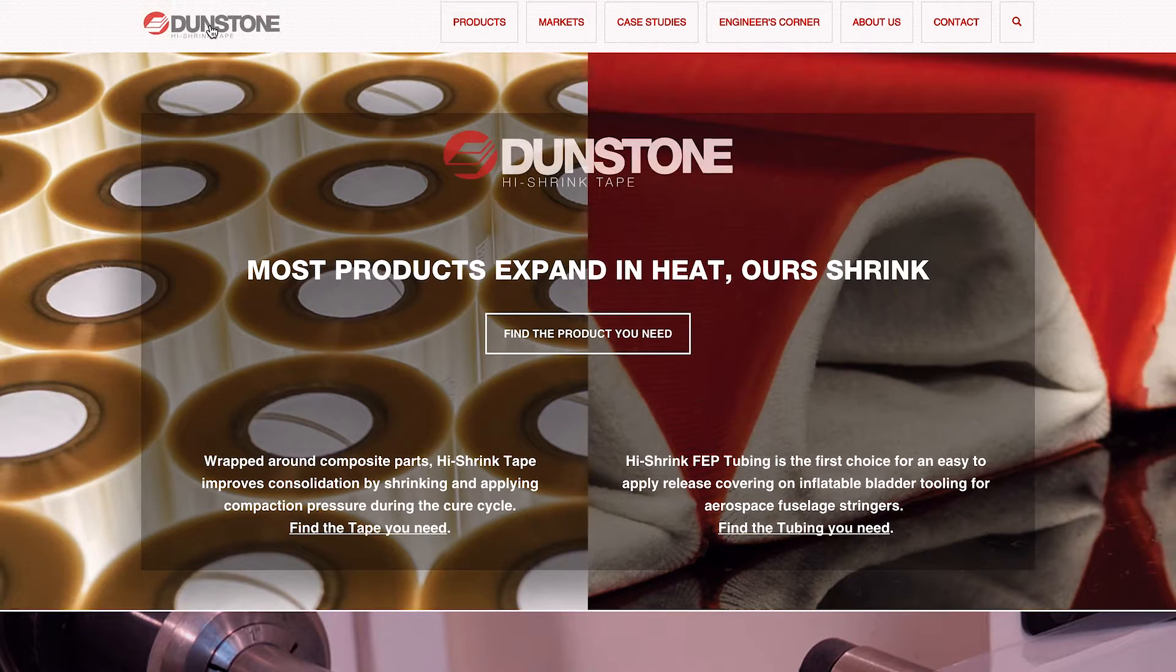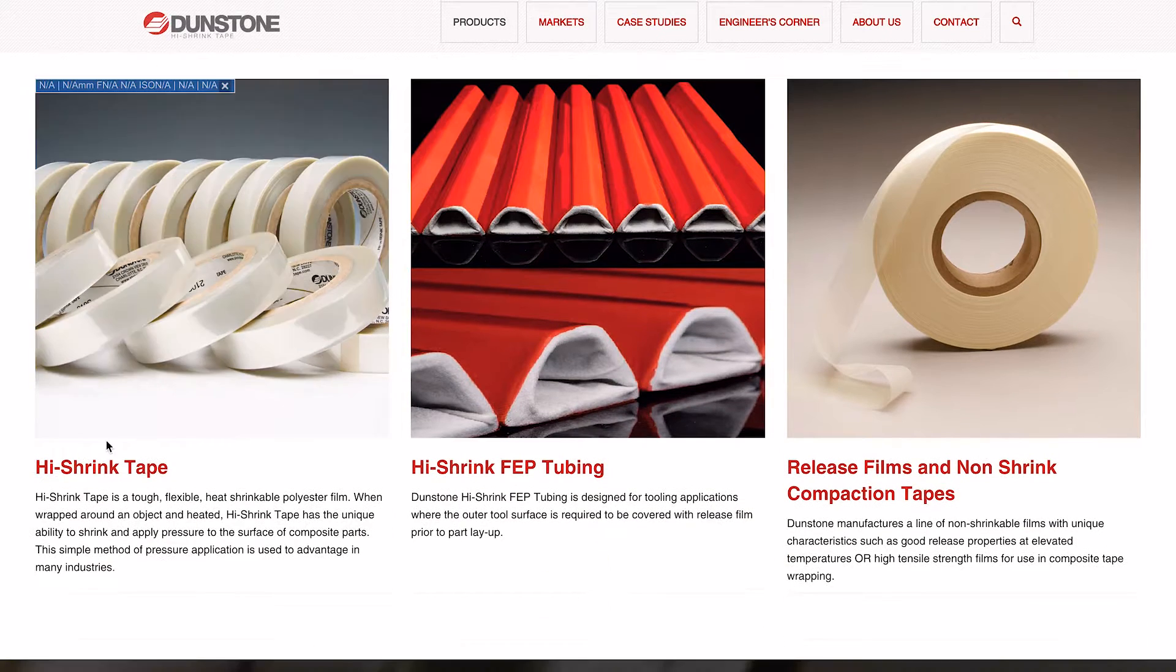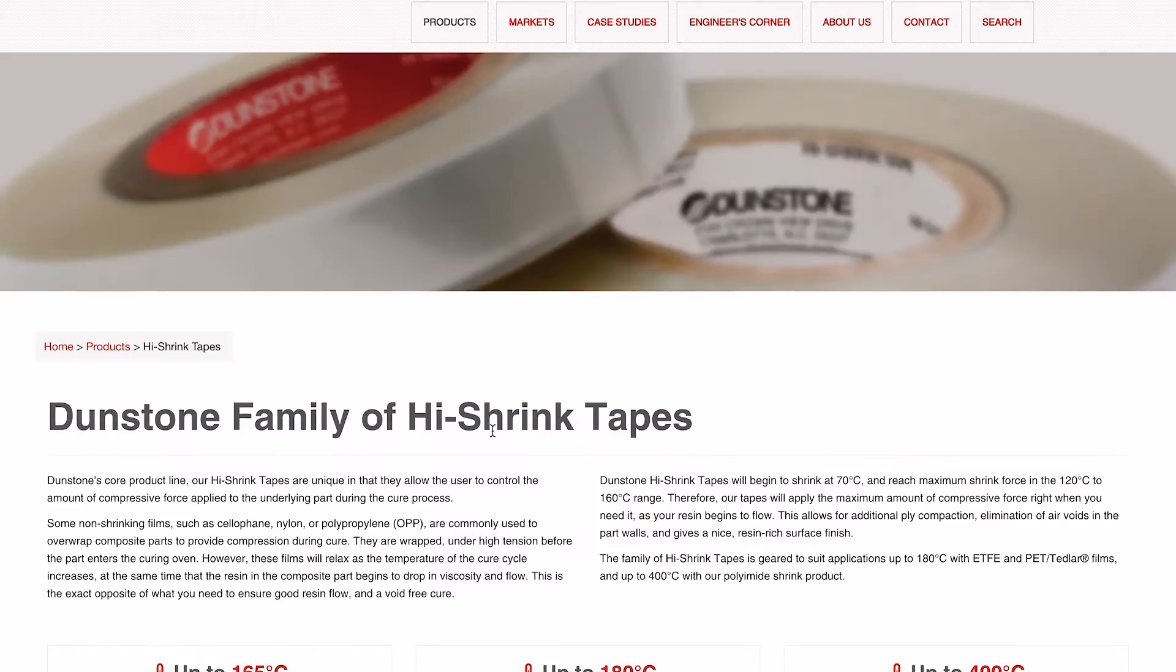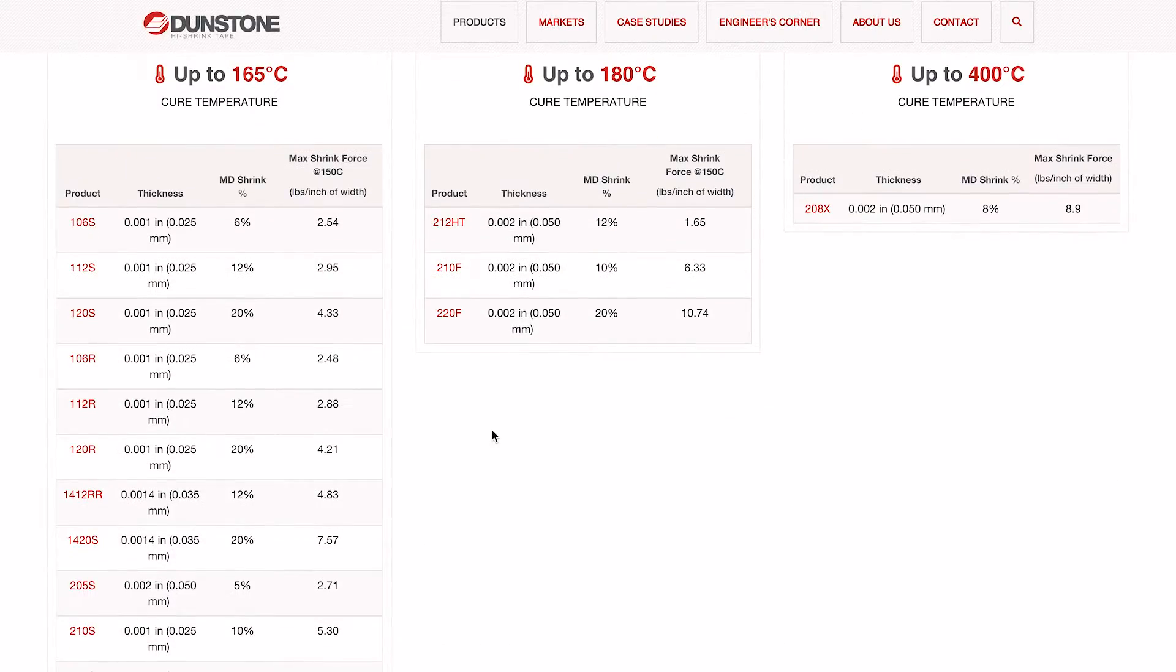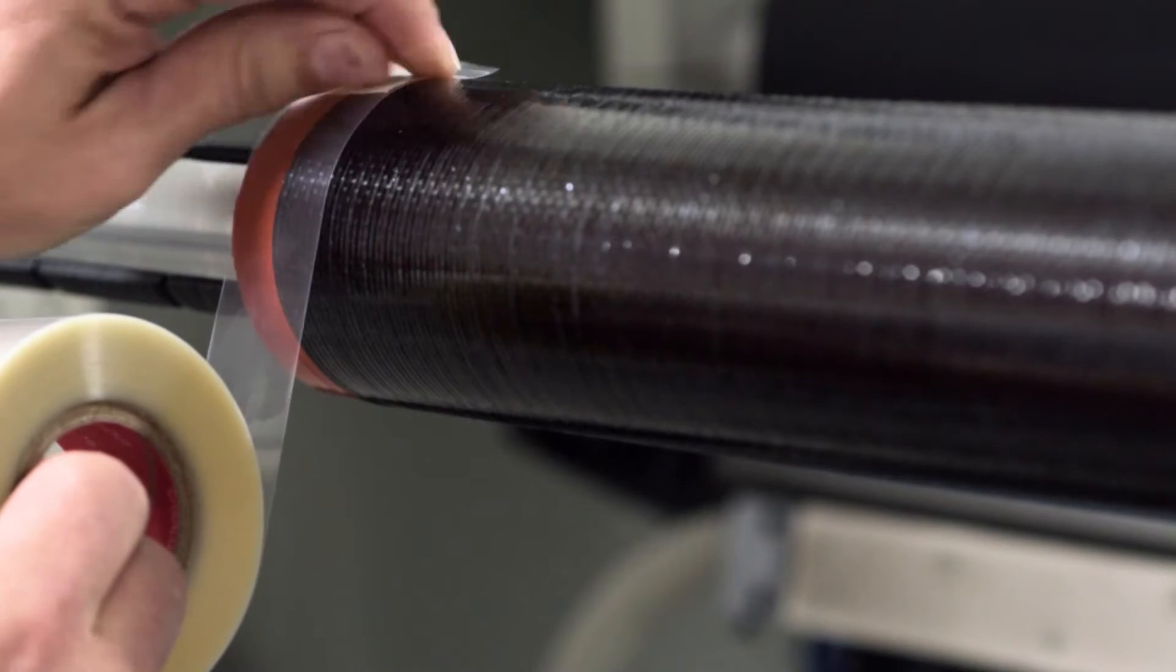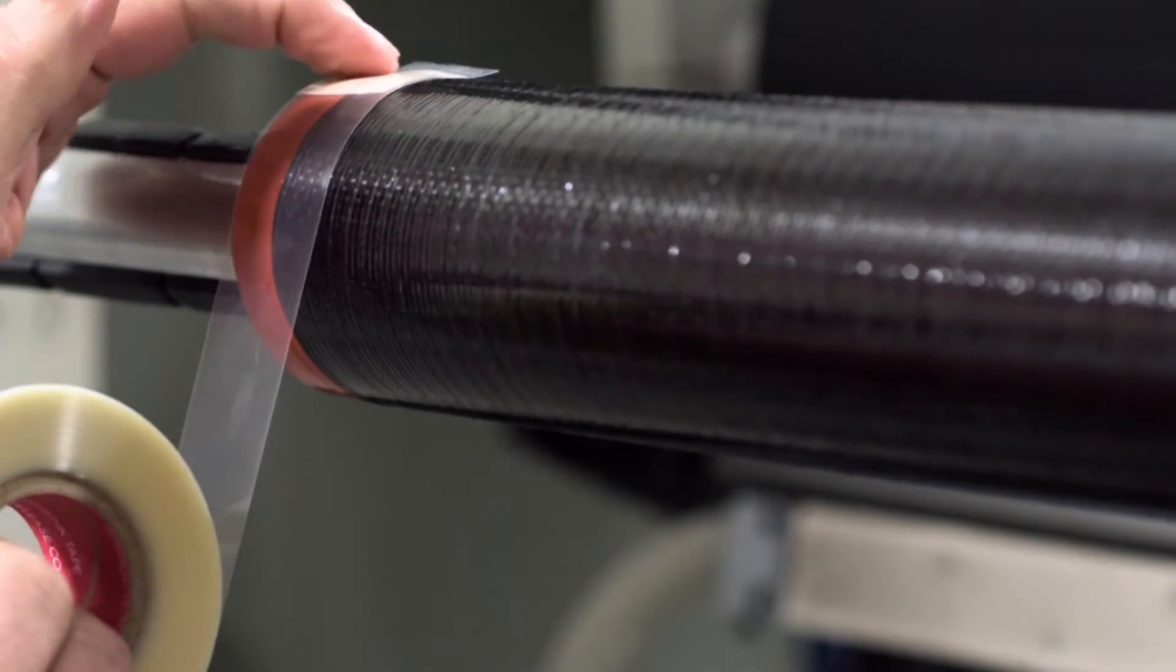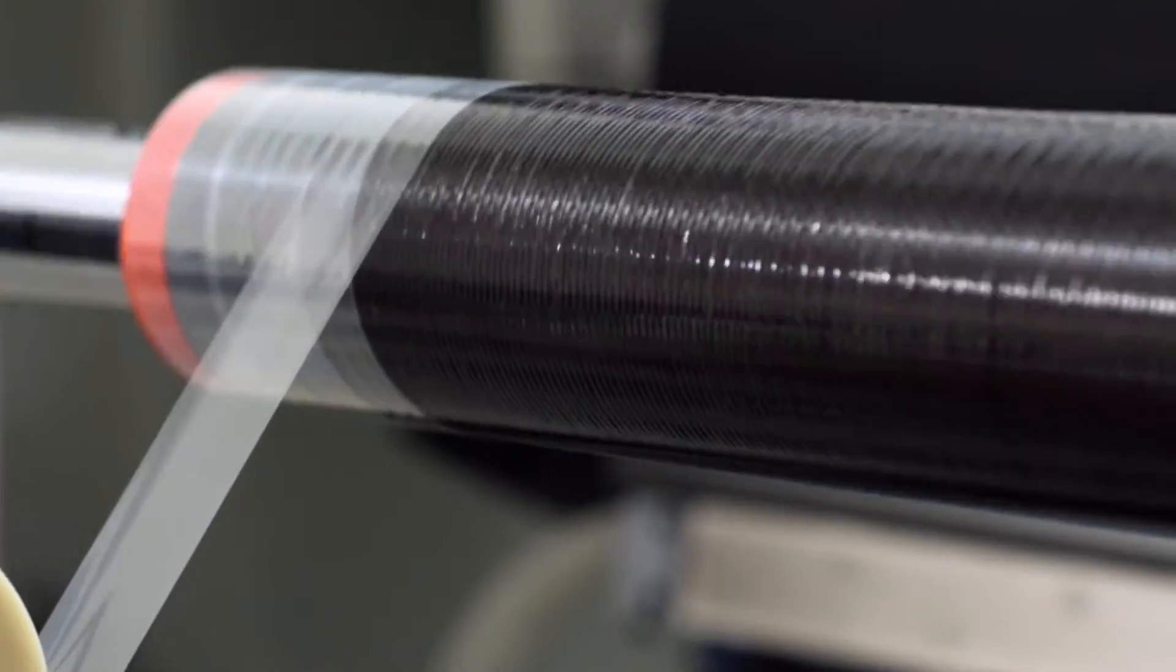Manufacturer of high shrink tapes for the composite industry, sorted by cure temperature, film thickness, and shrink percentage. Our films are designed to be applied to the outside of composite parts to provide consolidation force during cure. Application is easy.